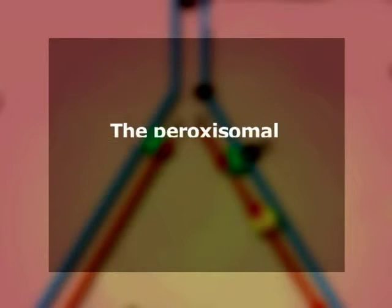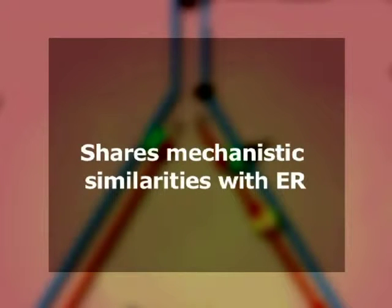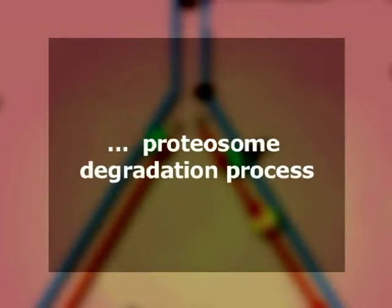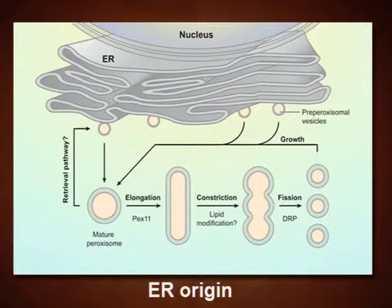Prokaryotic symbiotic origin for peroxisomes was suggested based on: Number 1, the peroxisomal membrane is composed of purely ether-lipid bricks, useful to trace their evolutionary pathway. Number 2, the peroxisomal matrix protein import system shares mechanistic similarities with the endoplasmic reticulum and proteasome degradation process, indicating a common evolutionary history. Earlier it was believed that peroxisomes originate by budding from the endoplasmic reticulum. However, evidence now suggests that new peroxisomes arise only from pre-existing peroxisomes by growth and fission.